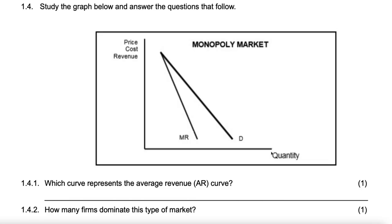Study the graph below and answer the questions that follow. The first thing we see is the heading Monopoly Market, so we already know there's one seller of whatever product this is. A good example is ESCOM — they are the sole providers of electricity in South Africa.